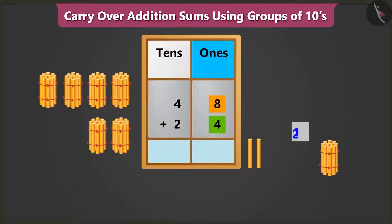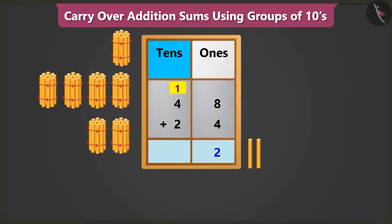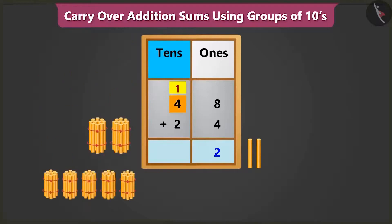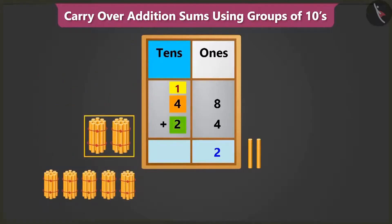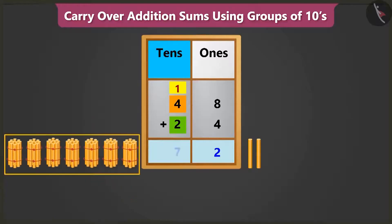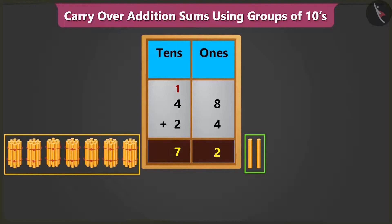From 12 ones, we will write 2 in the ones box and carry over 1 ten in the tens box. Now when we add 1 and 4, we get 5, and adding 5 and 2 we get 7. So 7 tens added to 2 ones makes 72. We have to pay 72 rupees.